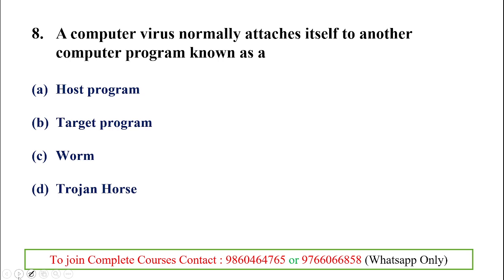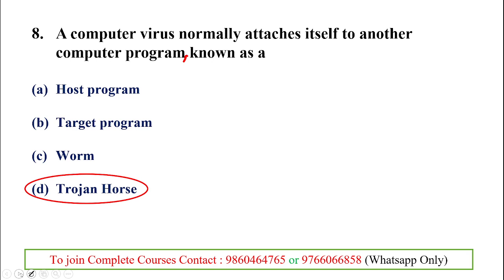Next question: a computer virus normally attaches itself to another computer program — known as? The virus inserts itself into a particular program but also harms other computer programs. It affects into one program but also spreads harm to another computer program. That is known as a trojan horse. Just as a trojan horse has the power to move fast, a computer virus through a trojan horse also affects other parts of the computer program.